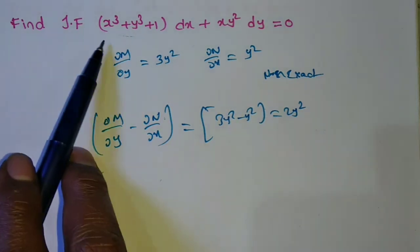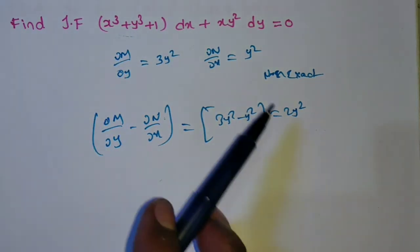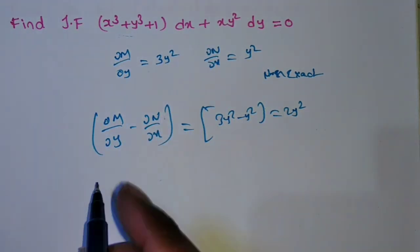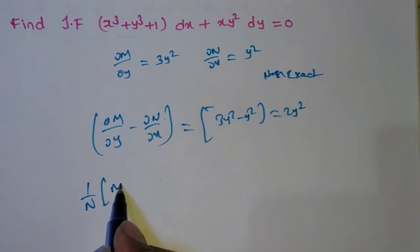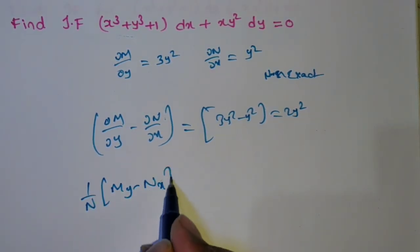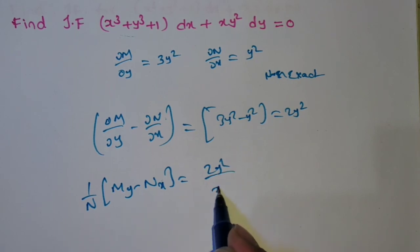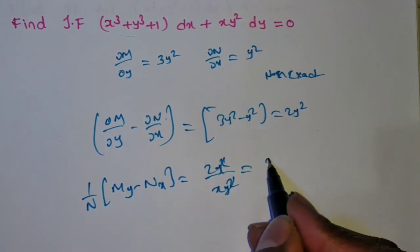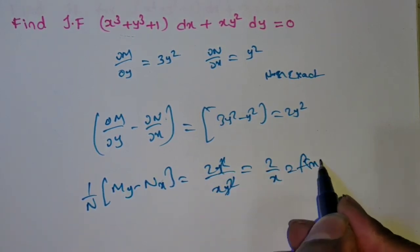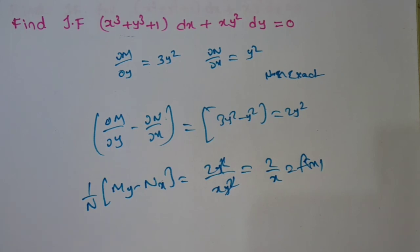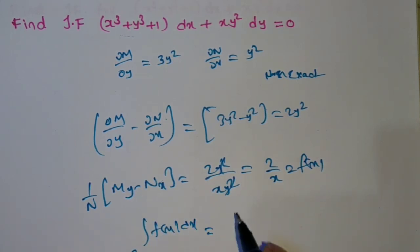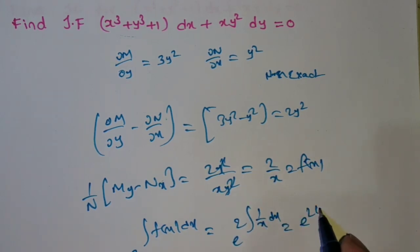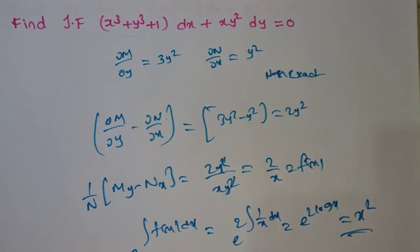Find ∂M/∂y minus ∂N/∂x: 3y² minus y² = 2y². Dividing by M is not possible. Dividing by N: N = xy², so 2y²/(xy²) = 2/x = f(x). The integrating factor is e to the power of integral 2/x dx = e^(2 log x) = x². So x² is the integrating factor.